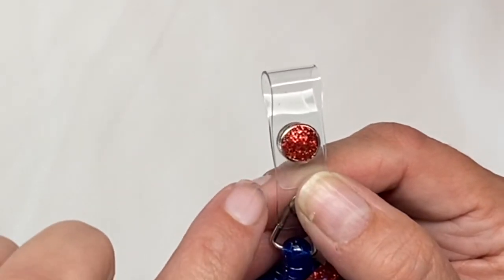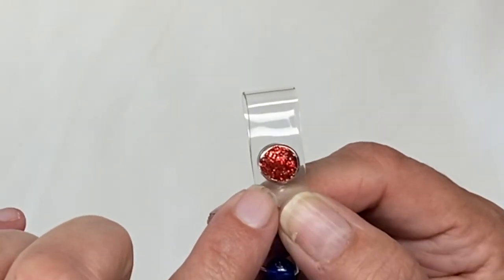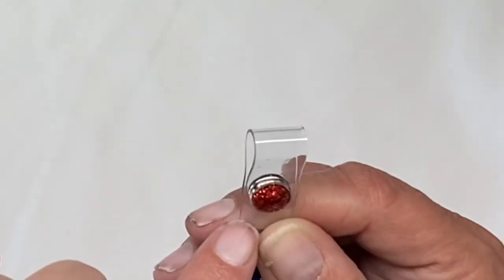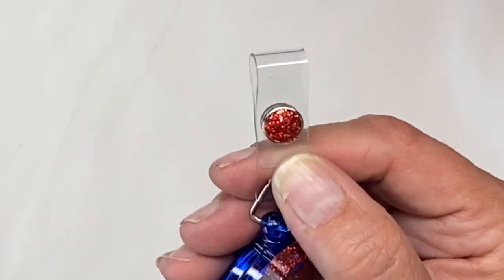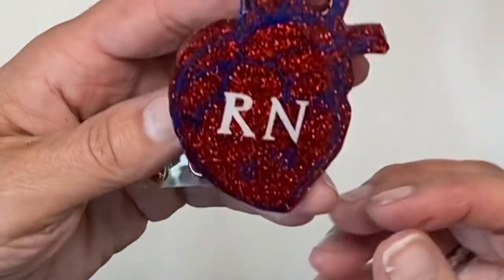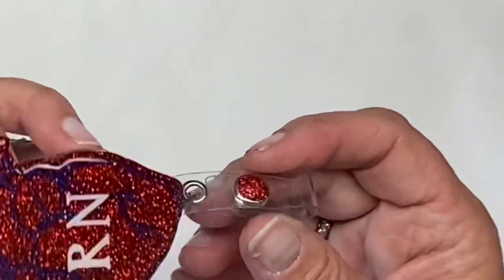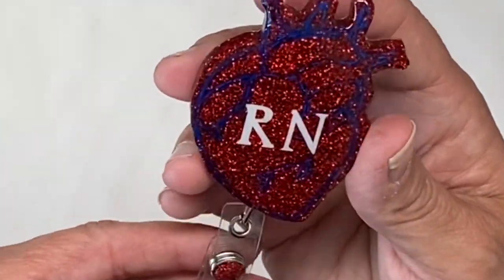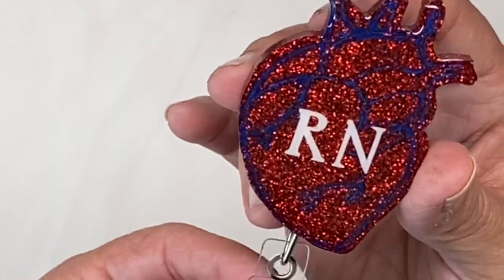However, the UV resin doesn't make it as shiny as epoxy does. Epoxy definitely makes it a little bit more shiny than UV resin. But this really turned out adorable and it makes a super cute badge reel.